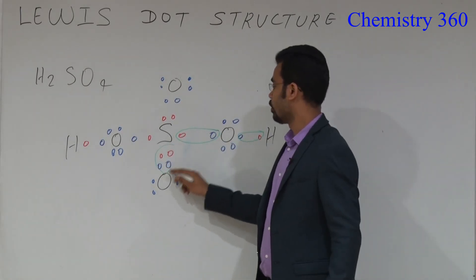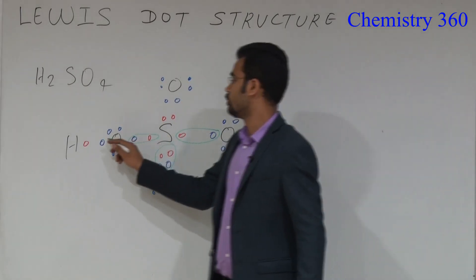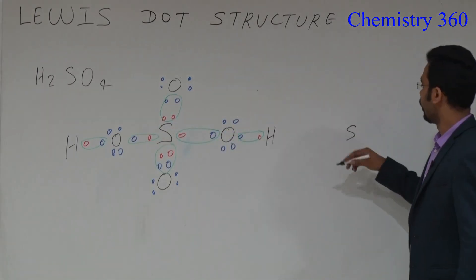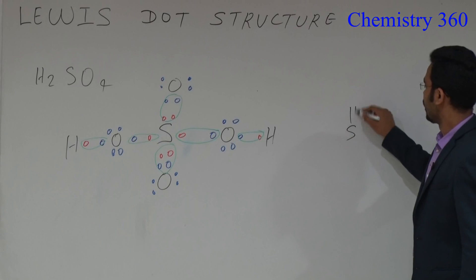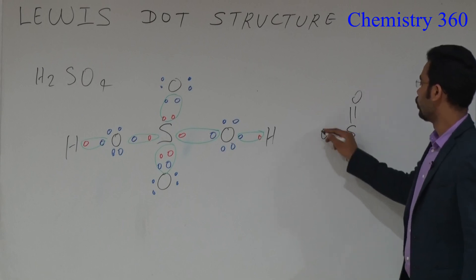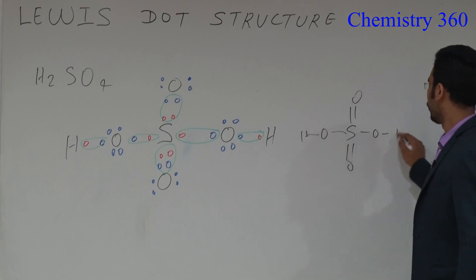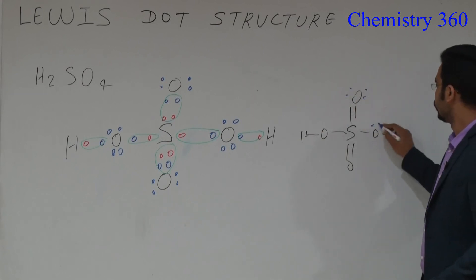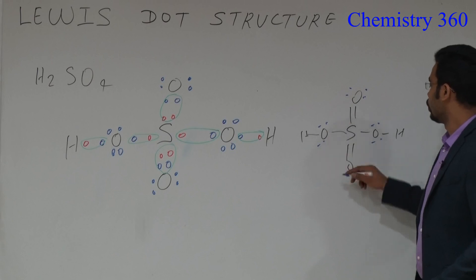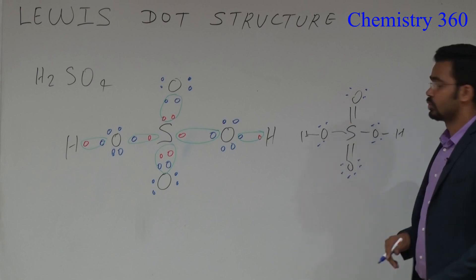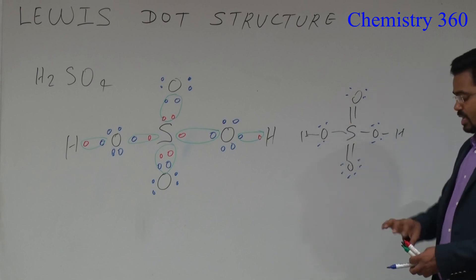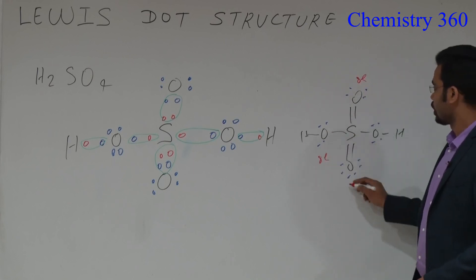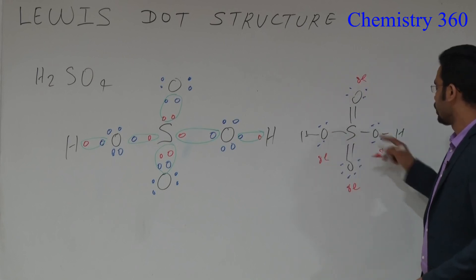The structure has 1 bond, 1 bond — sulfur double bond O, double bond O, O–H, O–H. Count the electrons: 8 electrons here, 8 electrons here, 8 electrons. Sulfur has 6 bonds, that is 12 electrons.